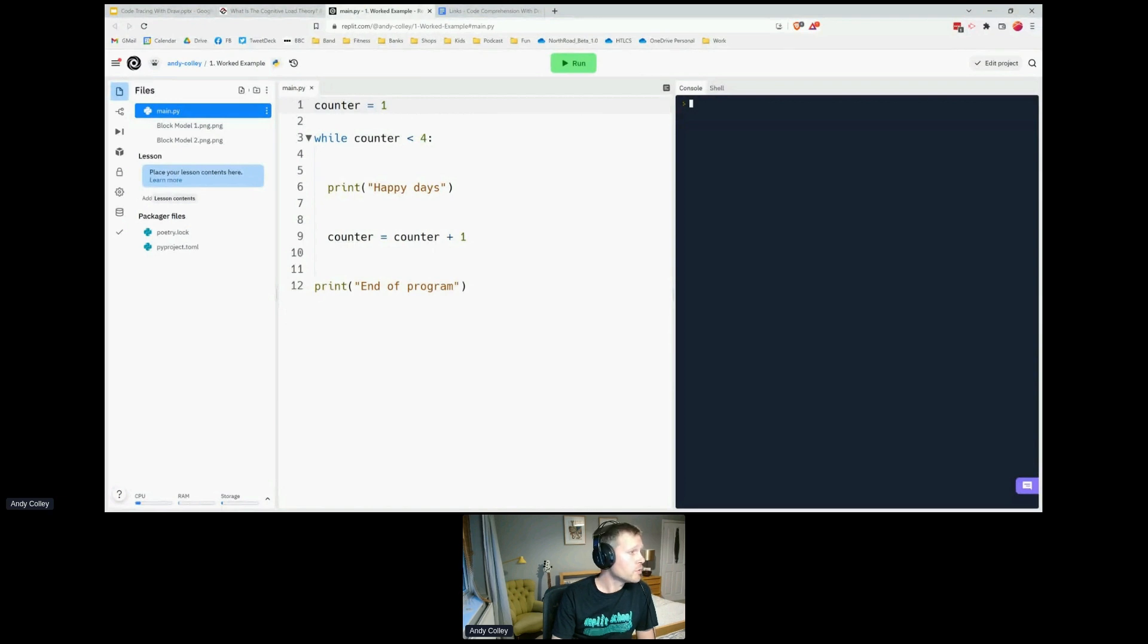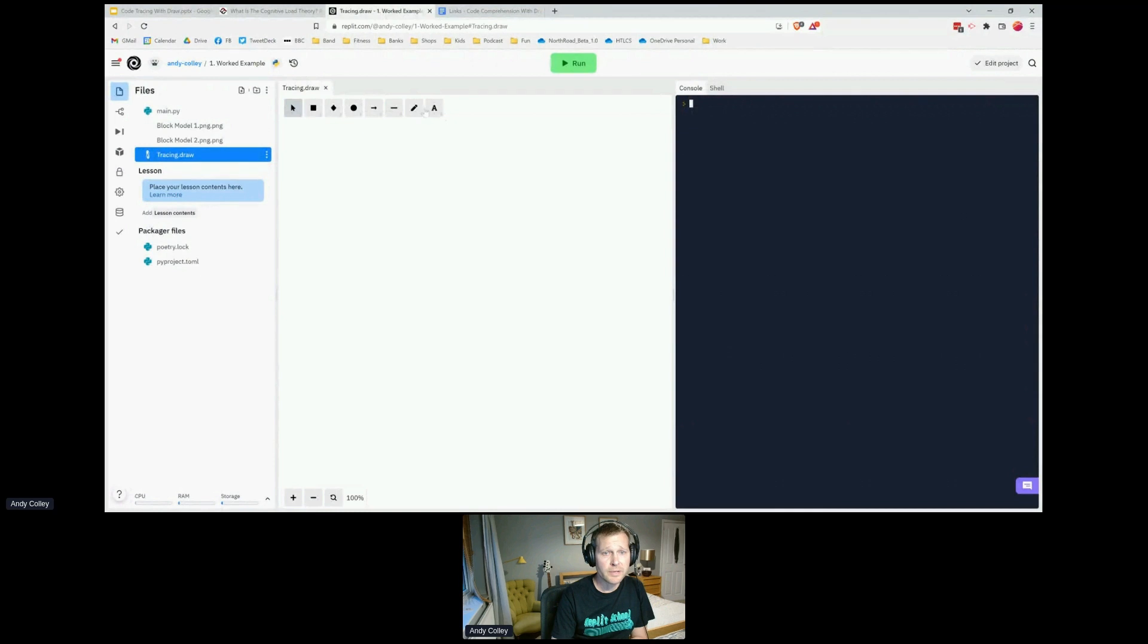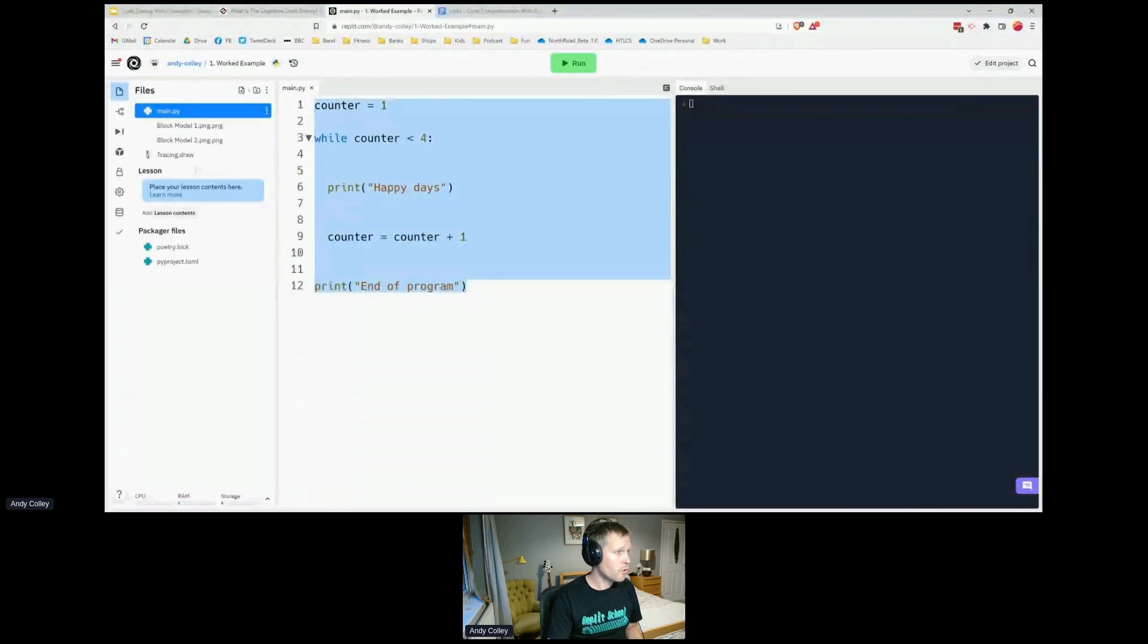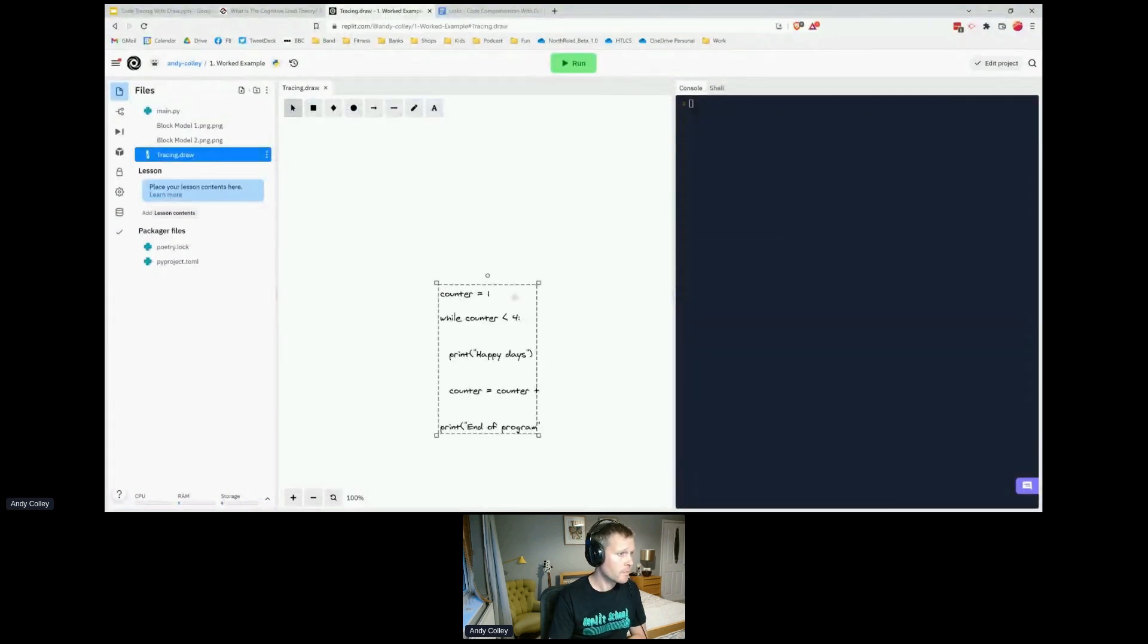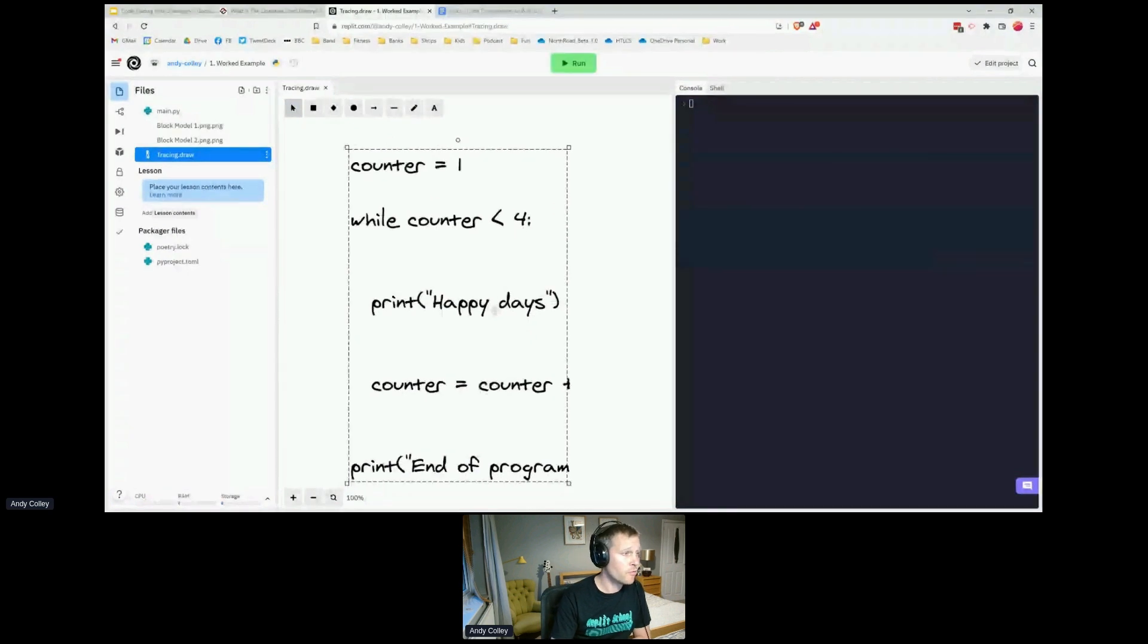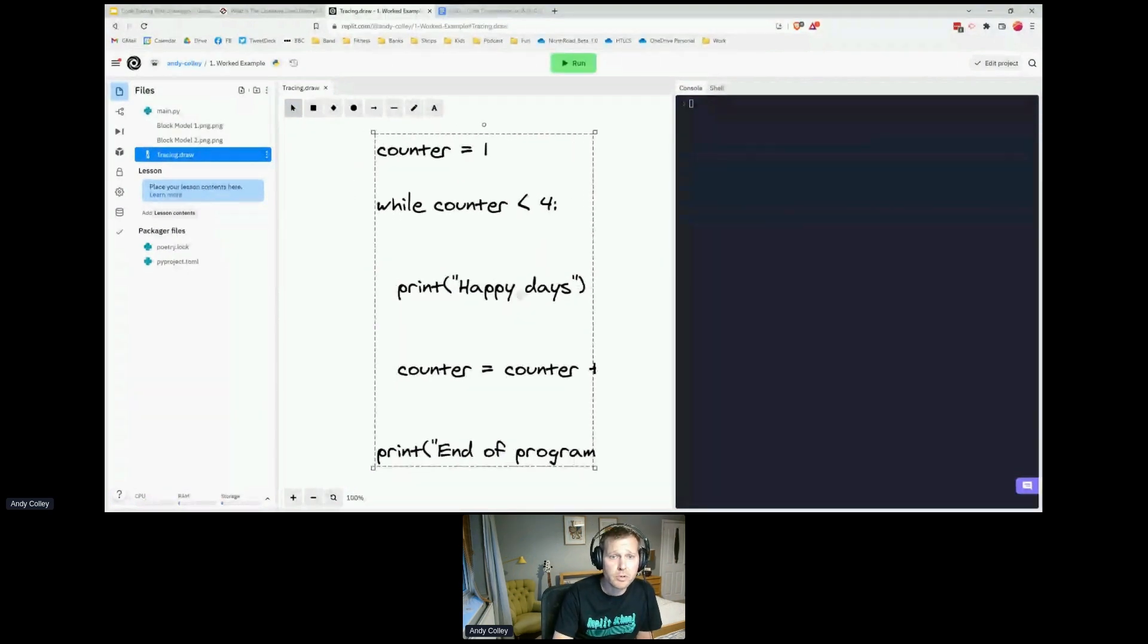Here is the work example file in the Replit team I shared with you before. Here's the code, and what I'm going to do is add a file. I'm going to call it tracing.draw. I'm going to use the draw file type. That gives me one of these files. I'm going to go back to my main, copy the code, go to my draw, and paste it in there.